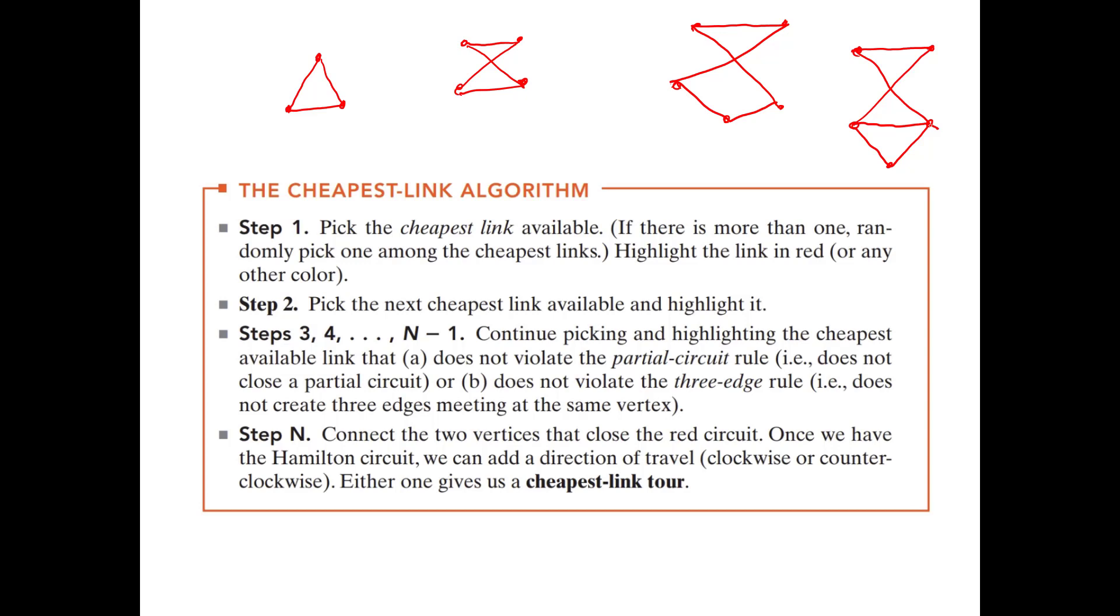So in a Hamilton circuit, you can only have one circuit. So the other thing that might happen is you may come across where you pick a cheap edge, and maybe it's one that already has two edges coming out of it. That's not going to be a Hamilton circuit because you're going to visit that vertex more than once again. So you can't do that either.